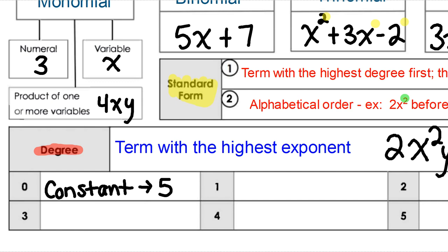If we have a first degree polynomial — where we just have a variable to the first exponent — so that would be like just x, or it might be like 3x — that's a first degree. The highest exponent is just one. We call that a linear. We have lots of experience with those from Algebra 1.